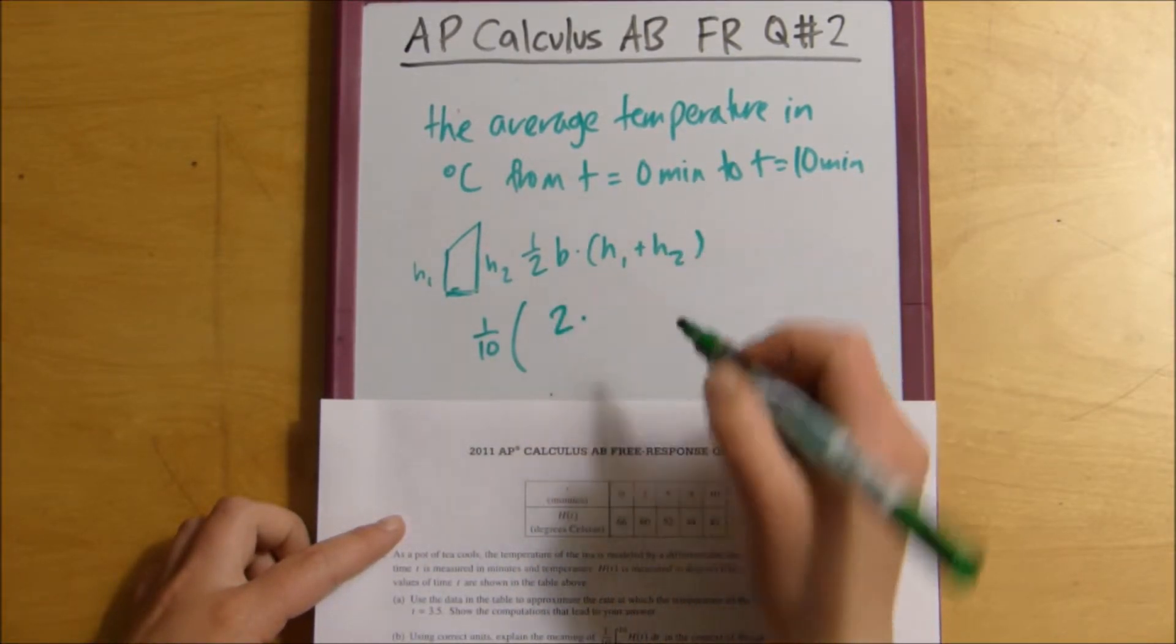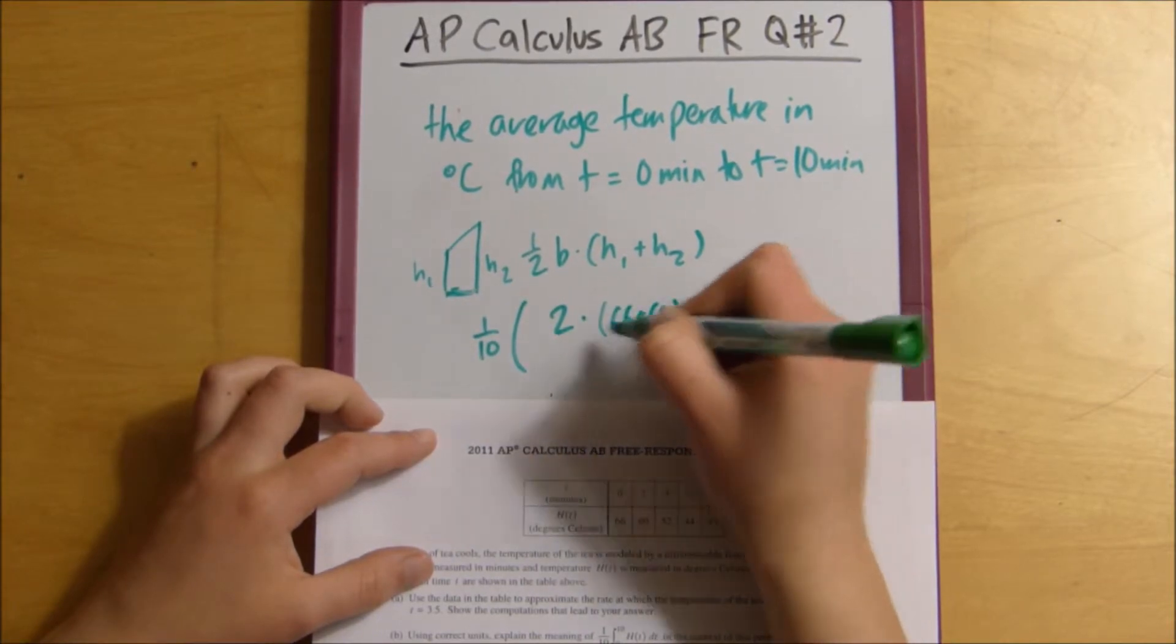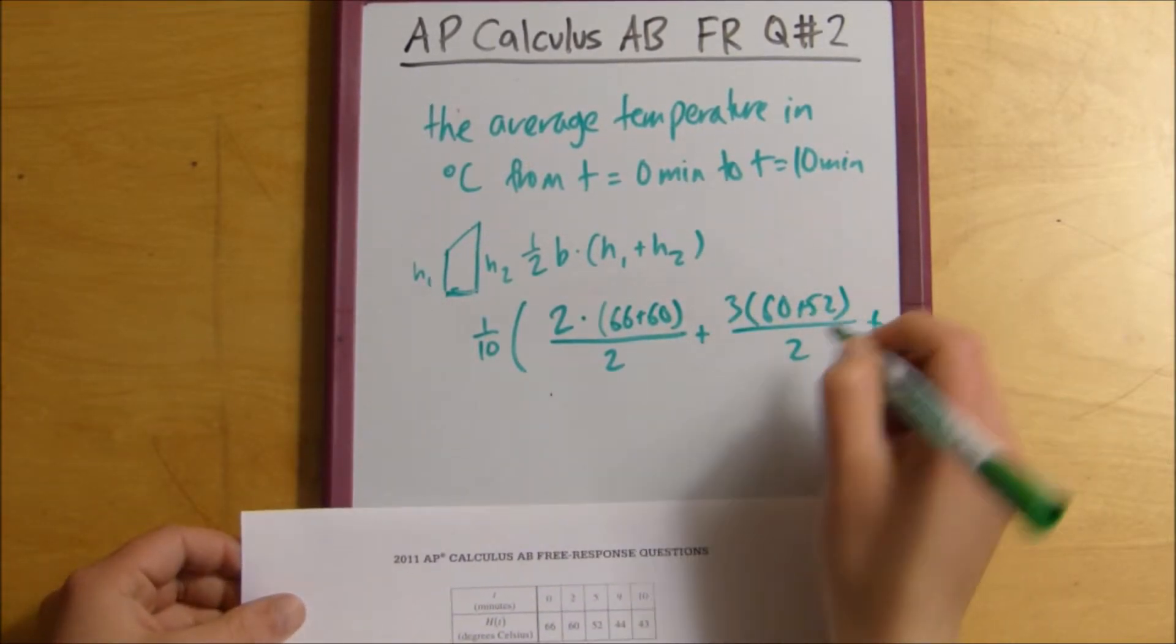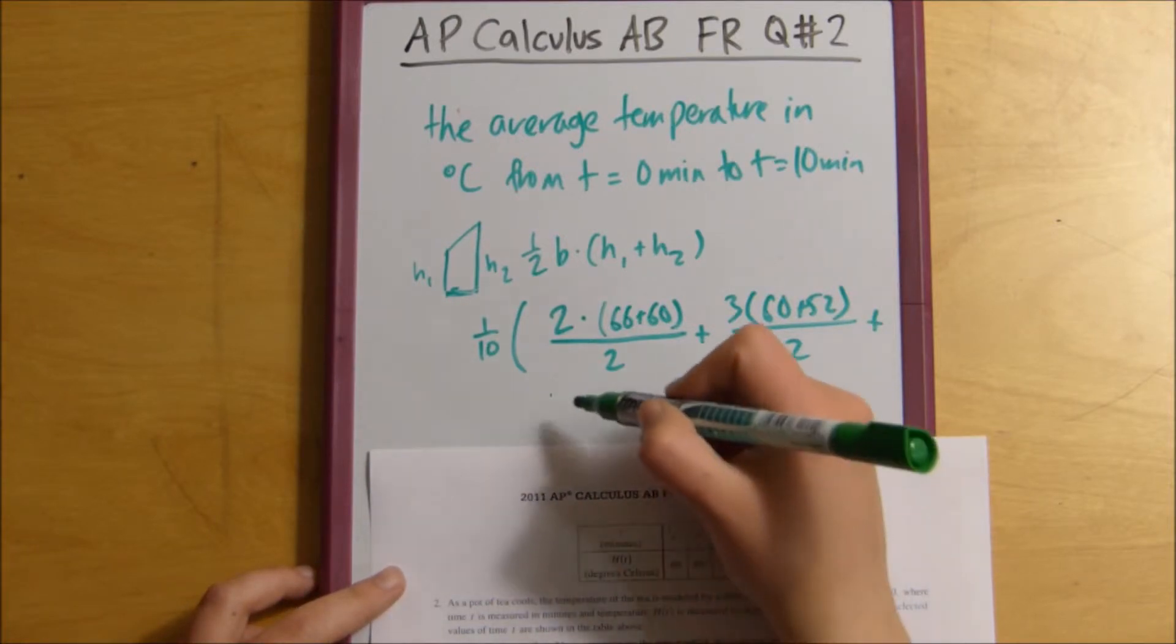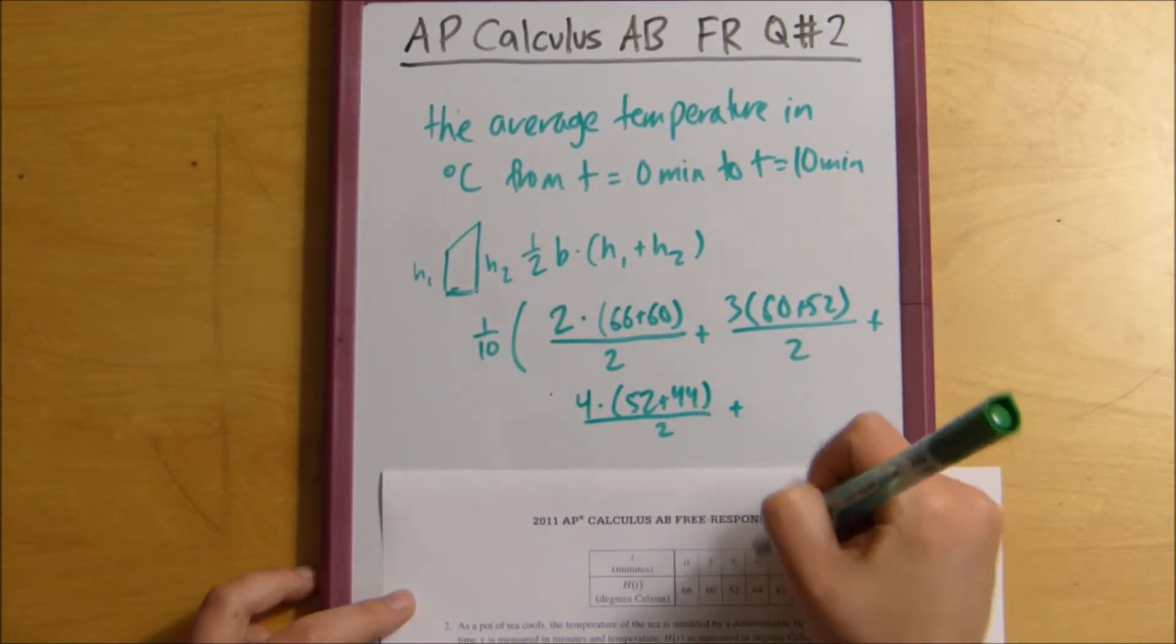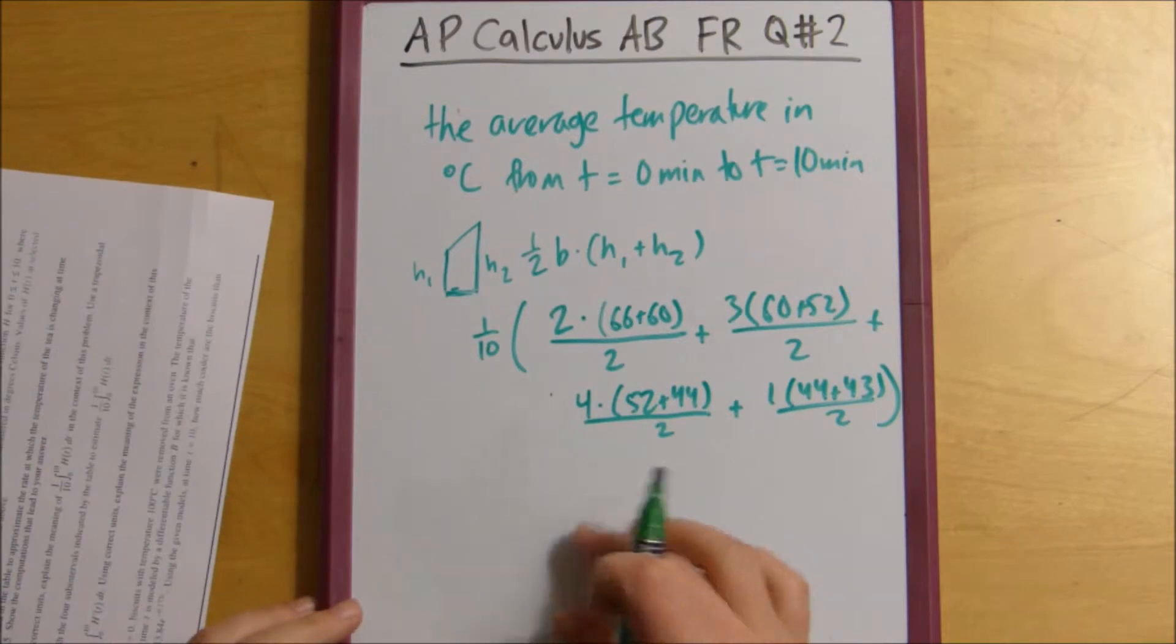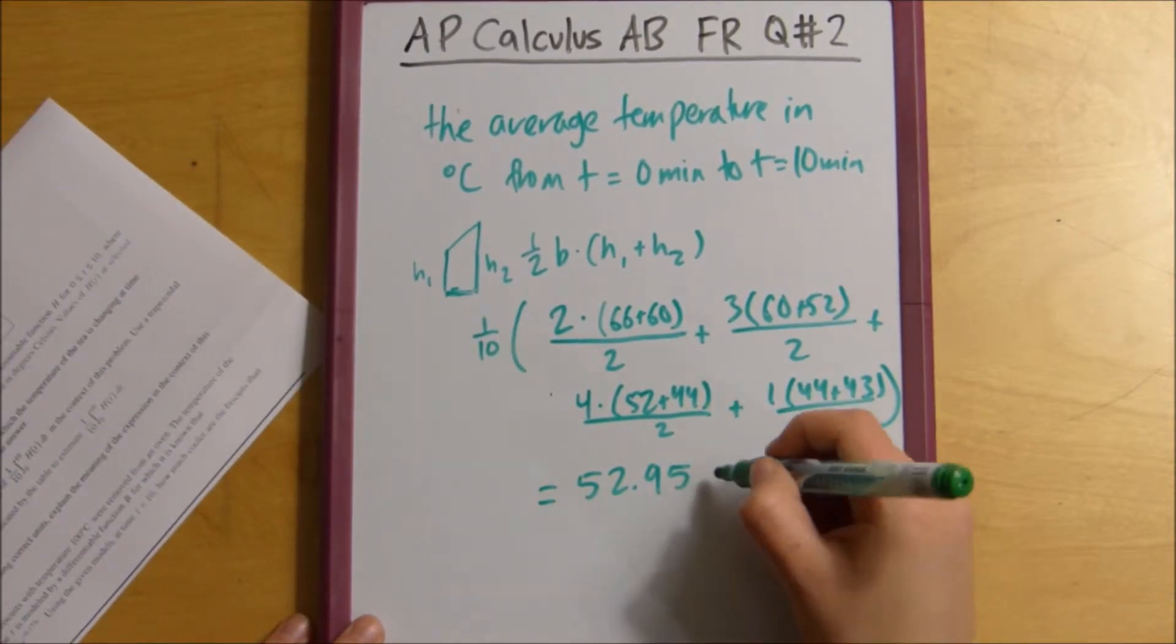We would do, for our first one, it would be 2 times height 1 plus height 2—that's what the y values are. 66 plus 60 over 2, plus the next one is a change of x of 3 times 60 plus 52, all over 2. Oh, I'm going to have to move it down. And then, can you still see it? Yeah. And then, our next one is going to be a change of 4, 4 times 52 plus 44, all over 2, plus our last one, a change of x of 1, and then 44 plus 43, all over 2. And this ends up being 52.95 degrees Celsius.